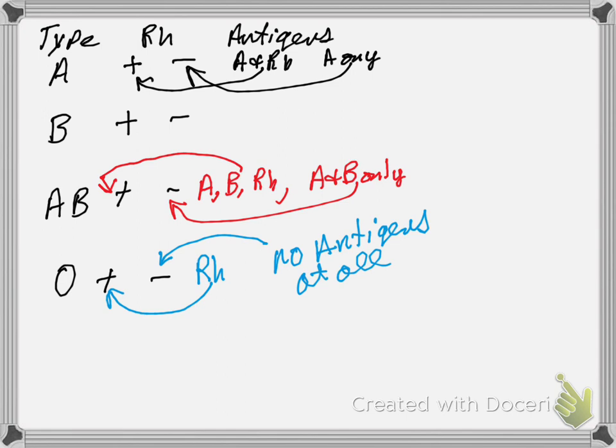So someone who's O negative is not going to have any antigens. Hopefully this helps you to see how blood type can really help us out when we start looking at samples and crime scenes — seeing who could have possibly done it and who had no possible chance of having done it. I hope this helps, and I will see you in the next video. Thank you.